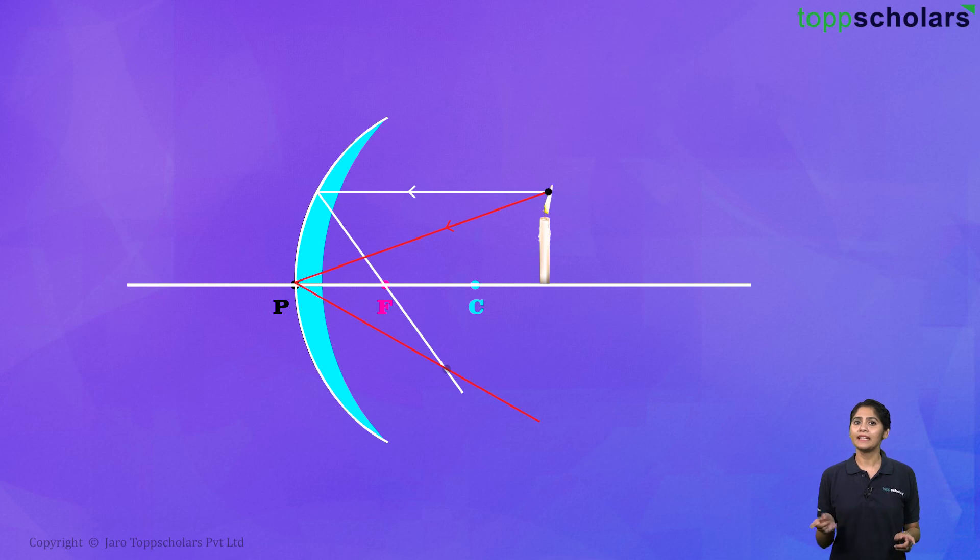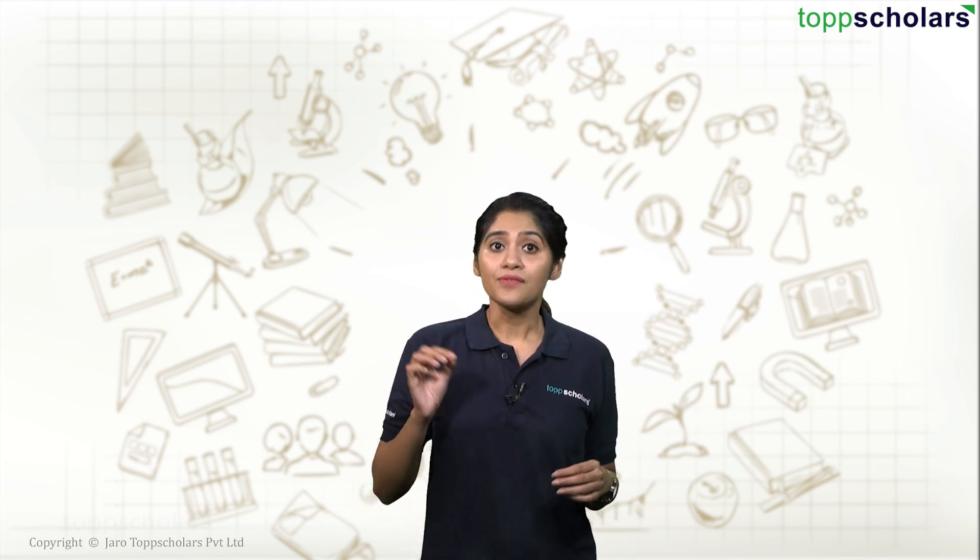That means to obtain a sharp image, we have to move the screen away from the mirror. And we can say that the image is also moving away from the mirror. Notice the image is now getting bigger. So as we move the object closer to the mirror, notice we have to move the screen away from the mirror. Also, you can see that the image is getting bigger and bigger.